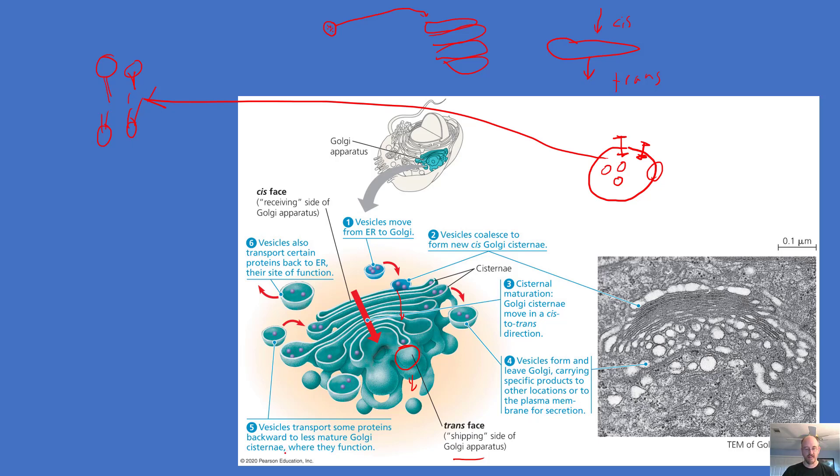I also want to mention that the names of these flattened disks are called cisternae. You might see that word, cisternae. Not common in Arkansas, but where I grew up, people would collect rainwater in a tank called a cistern. A cistern is a room that holds water, and that's what these are named after.